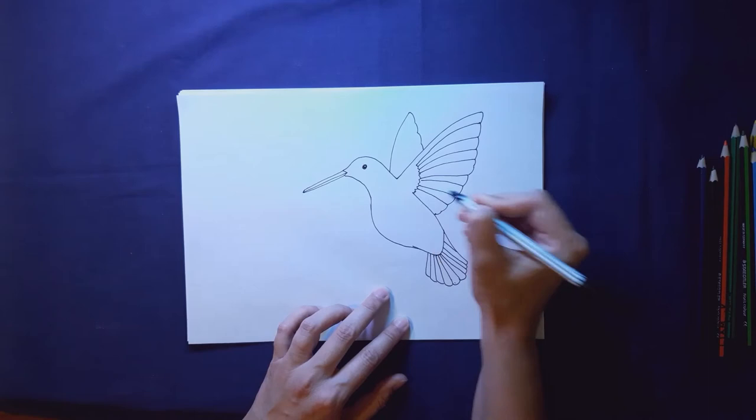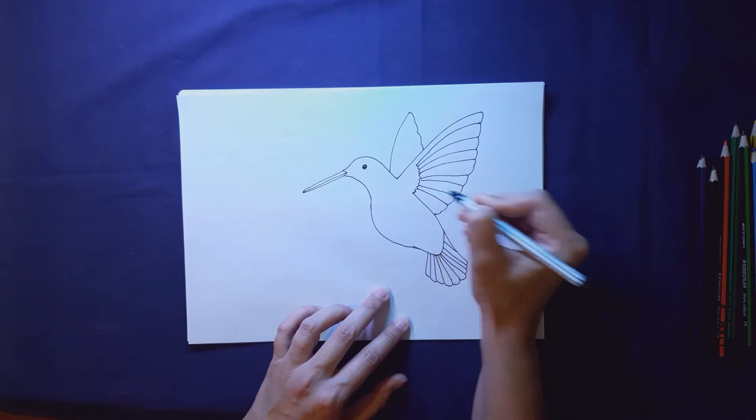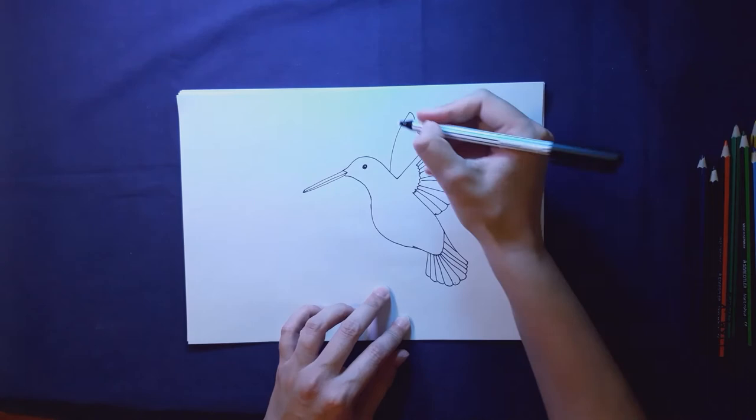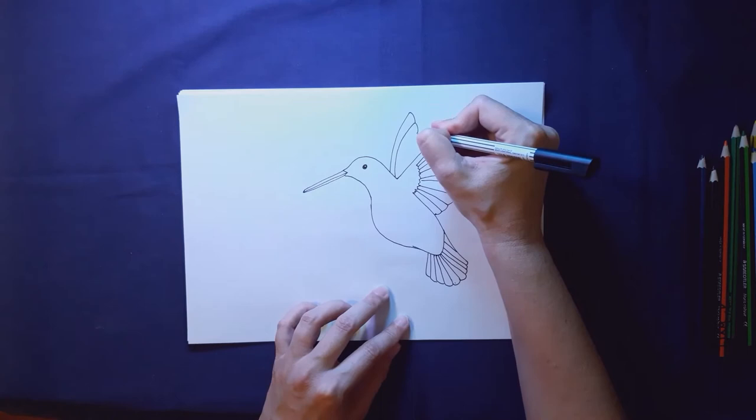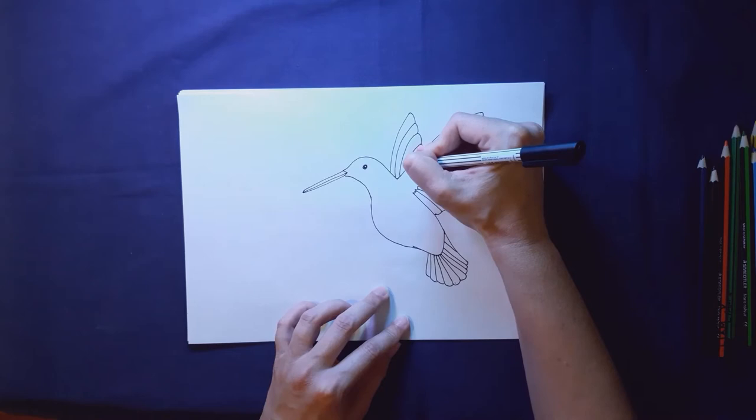Hummingbirds, some of the bigger hummingbirds, they beat their wings at about 12 times a second. The smaller ones, they can beat their wings more than 80 times a second. That's just amazing. How great is nature.